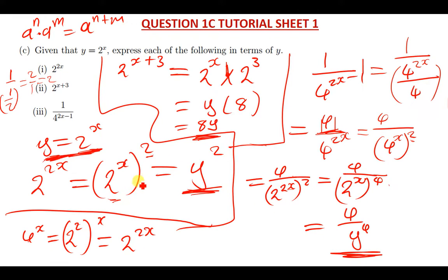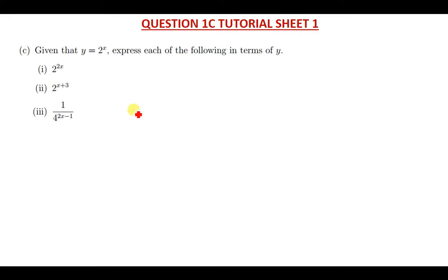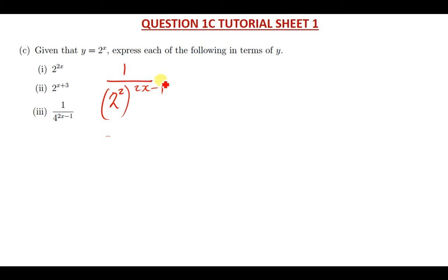So that is how you express all these solutions in terms of y. Let's use another method or approach to get the same answer. We can simplify the denominator in advance: 1 over 4 to the power (2x minus 1). Now 4 can be written as 2 to the power 2, so we have 1 over (2 to the power 2) with brackets (2x minus 1). Multiplying out: 2 times 2x is 4x, and 2 times negative 1 is negative 2.